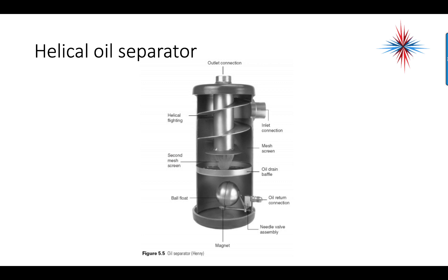Here is an example of a helical oil separator. The inlet is from the compressor, and we have an outlet. The inlet goes down through a helical drop that forces the oil molecules to cool down enough and separate through the oil drain baffle. There's a secondary mesh screen designed to help additional oil separate from the refrigerant. A standard ball float at the bottom, when it rises, allows the oil to return through the oil return connection back to either the compressor crankcase or the suction line.